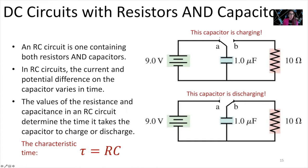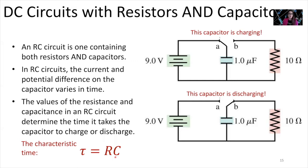The values of the resistance and capacitance in an RC circuit determine the time it takes your capacitor to charge or discharge. There is a characteristic time scale of the circuit that we define as the Greek letter tau, and that equals the total resistance of the circuit times the total capacitance. You could have a bunch of capacitors in series or parallel, or a bunch of resistors in series or parallel — the characteristic time is total resistance times total capacitance.